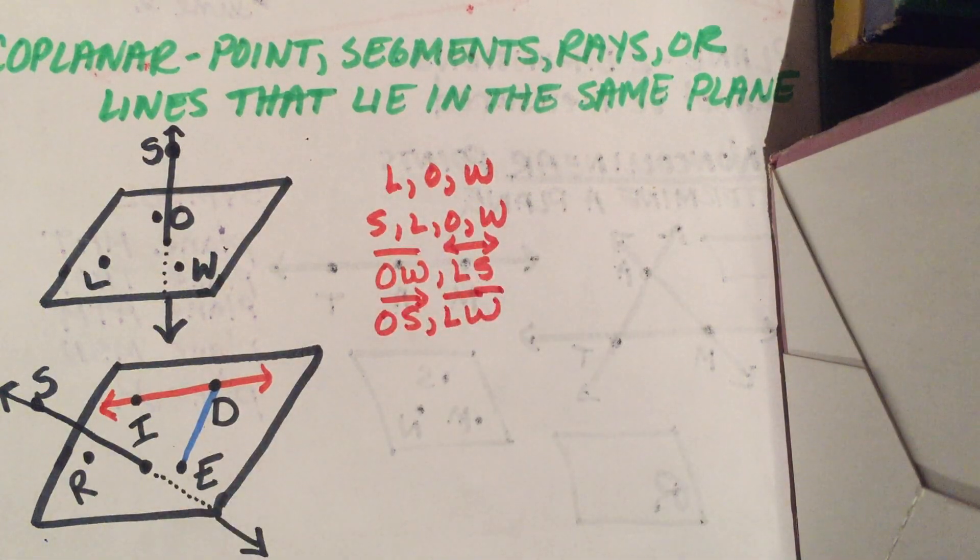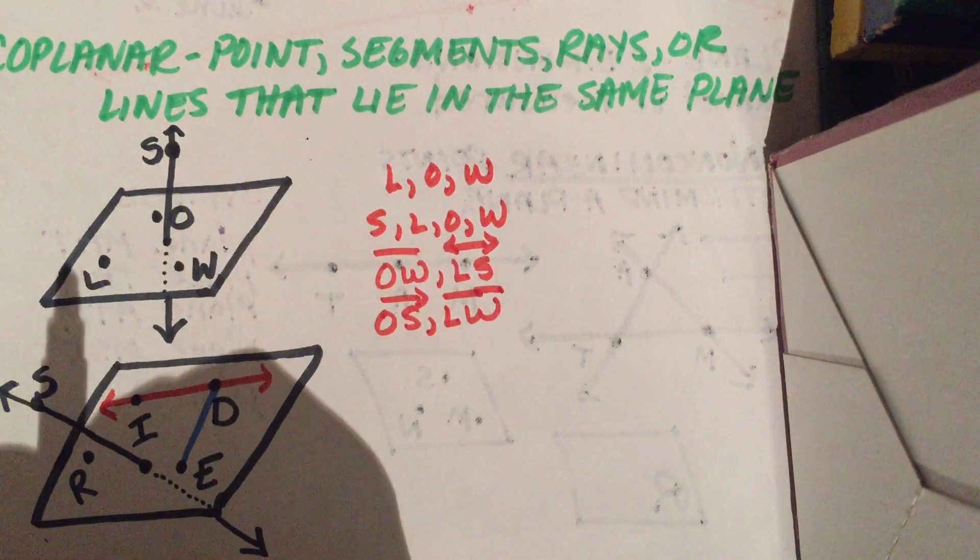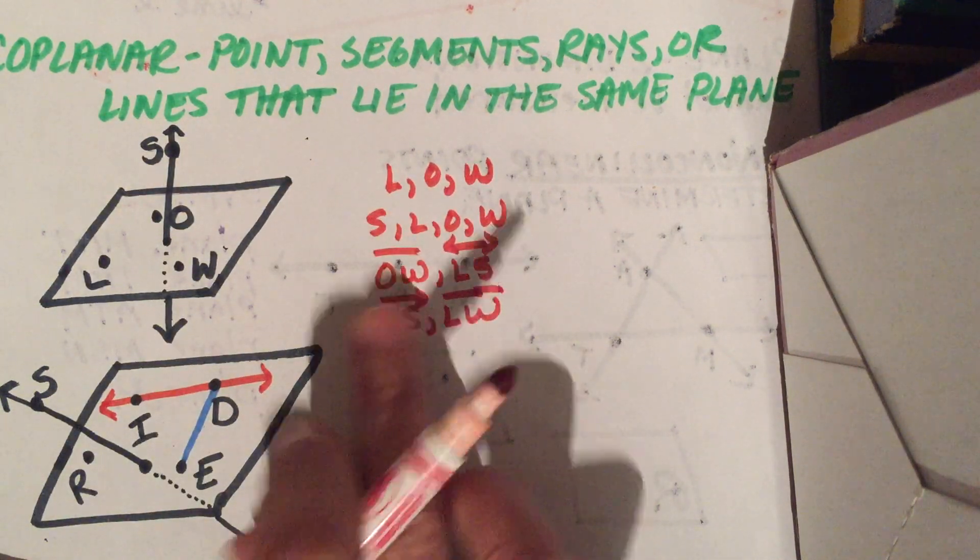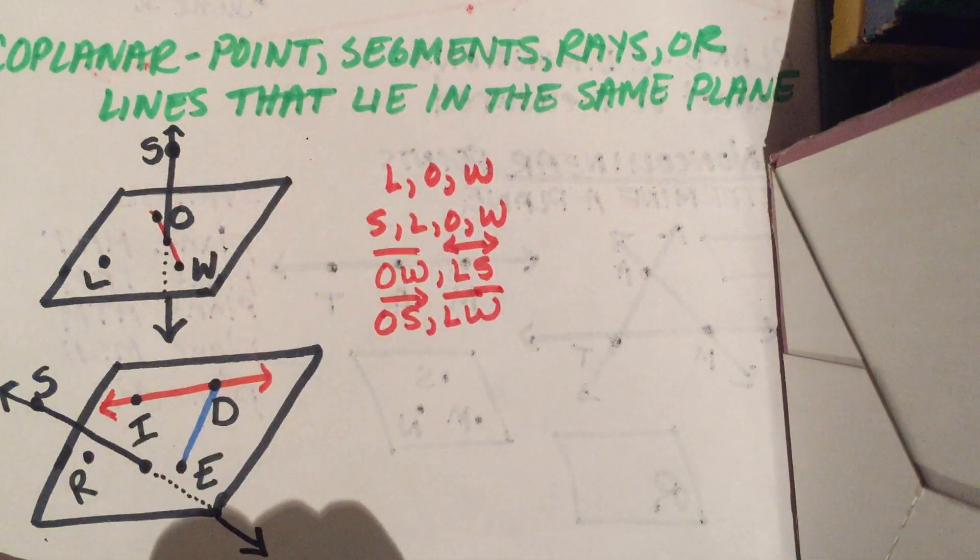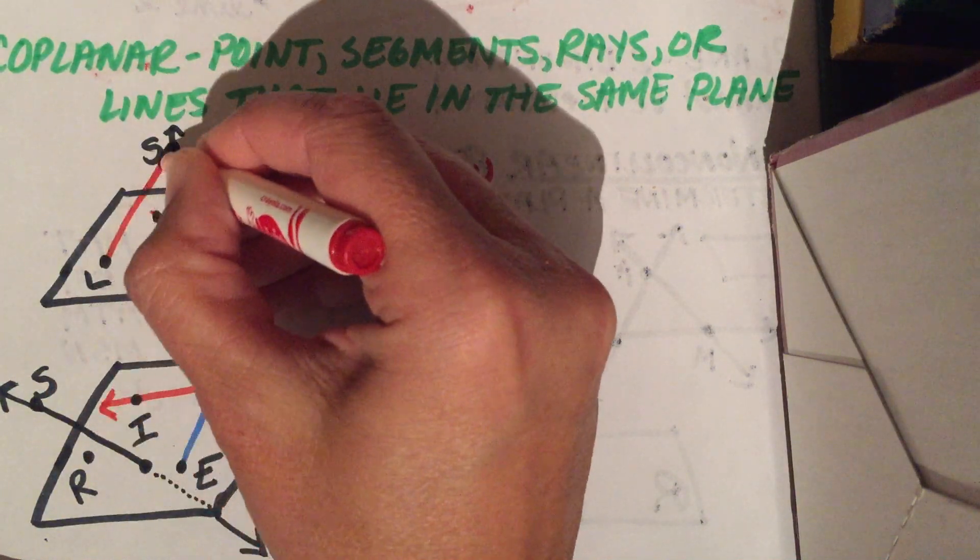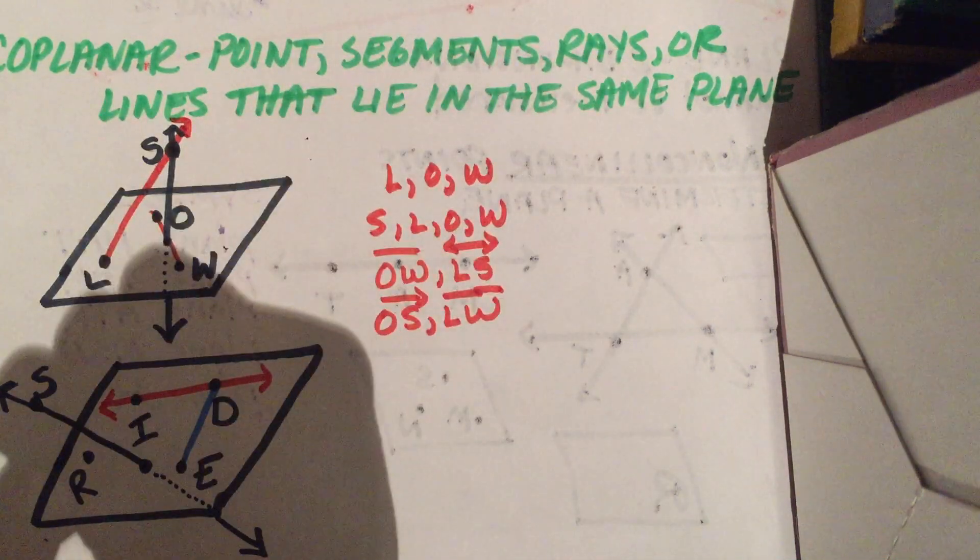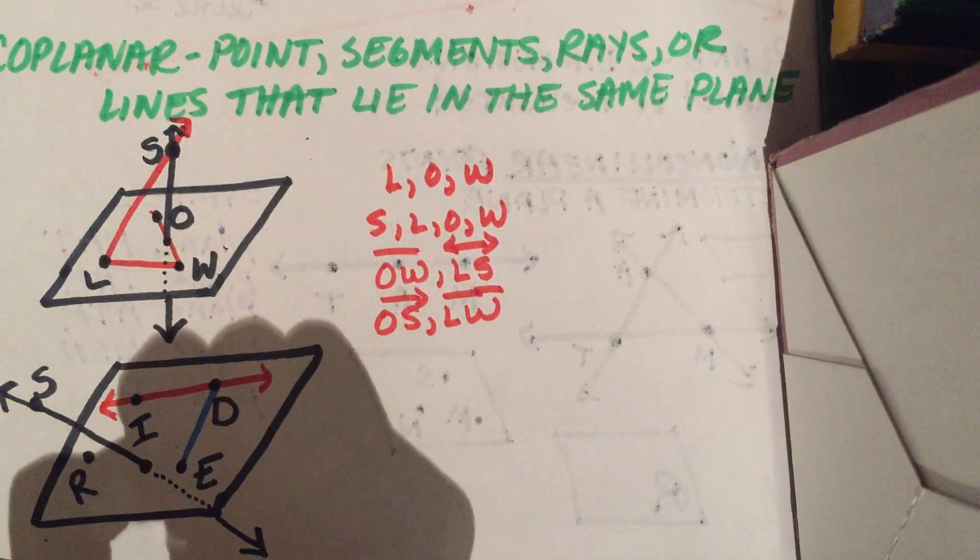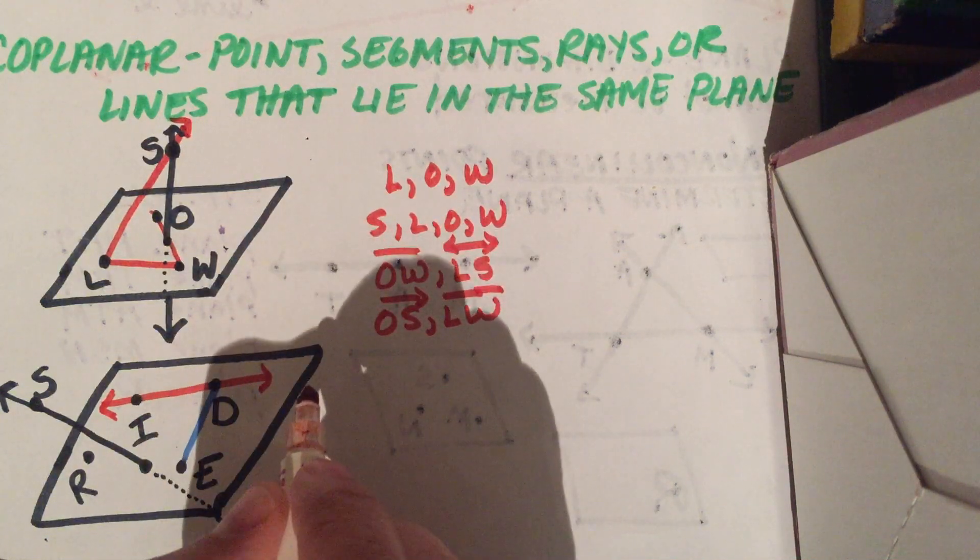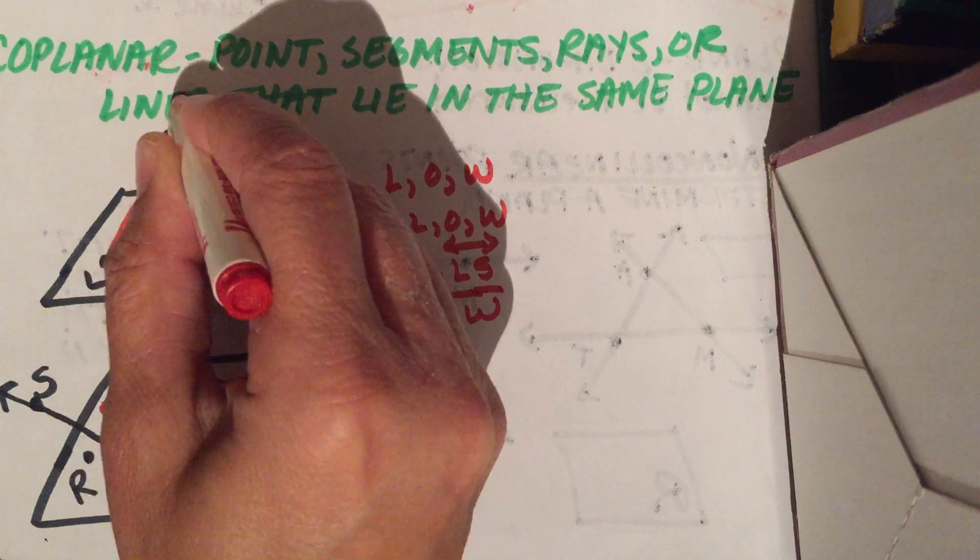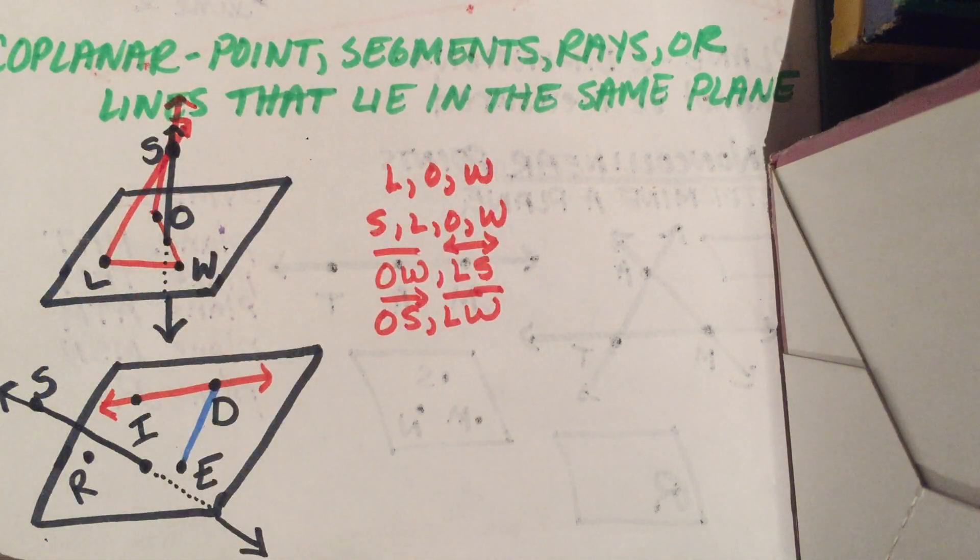For example, I have segment OW. You would just imagine that you had a segment drawn from O to W. Ray LS—you're just going to imagine a ray that goes from L through S. Segment LW, right there. Ray OS starts at O and goes through S. You can see now why sometimes they use fewer points. So let's see if these are all coplanar.